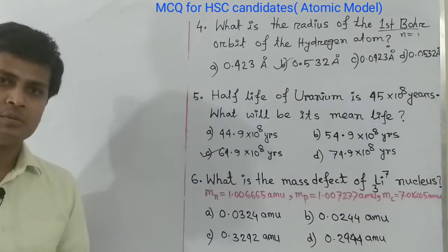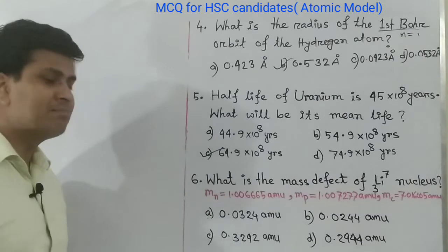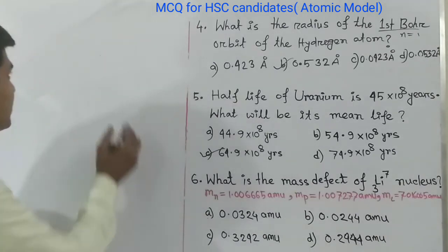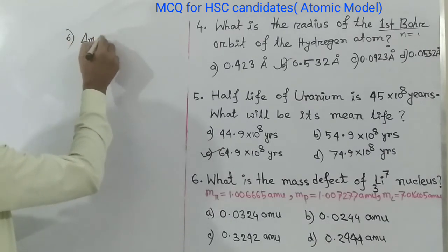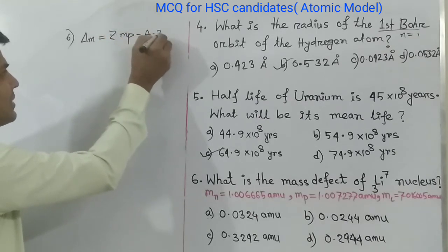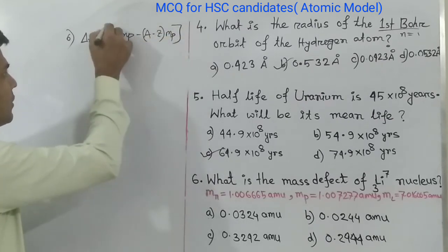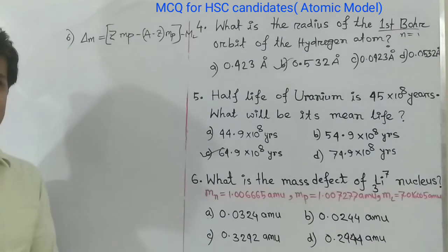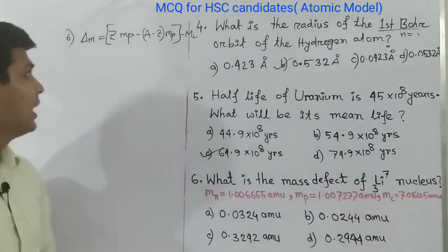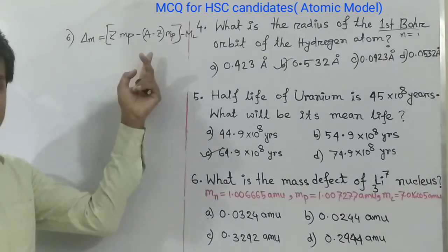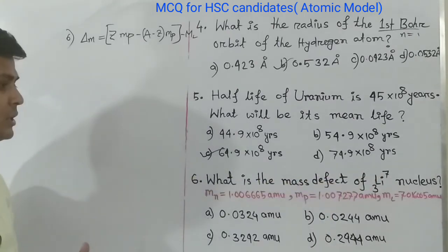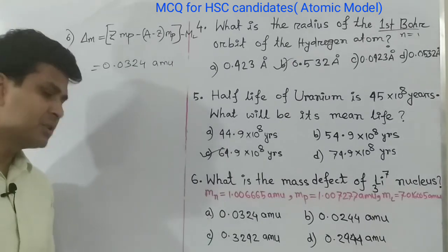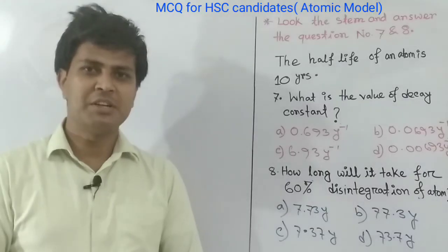MCQ 6: What is the mass defect of the lithium nucleus? Using the formula delta m equals to Z m_p plus (A minus Z) m_n minus M, with atomic number Z equals to 3 and atomic mass A equals to 7, and substituting all given values, we get the result 0.0324 atomic mass unit. Option A is the correct answer.